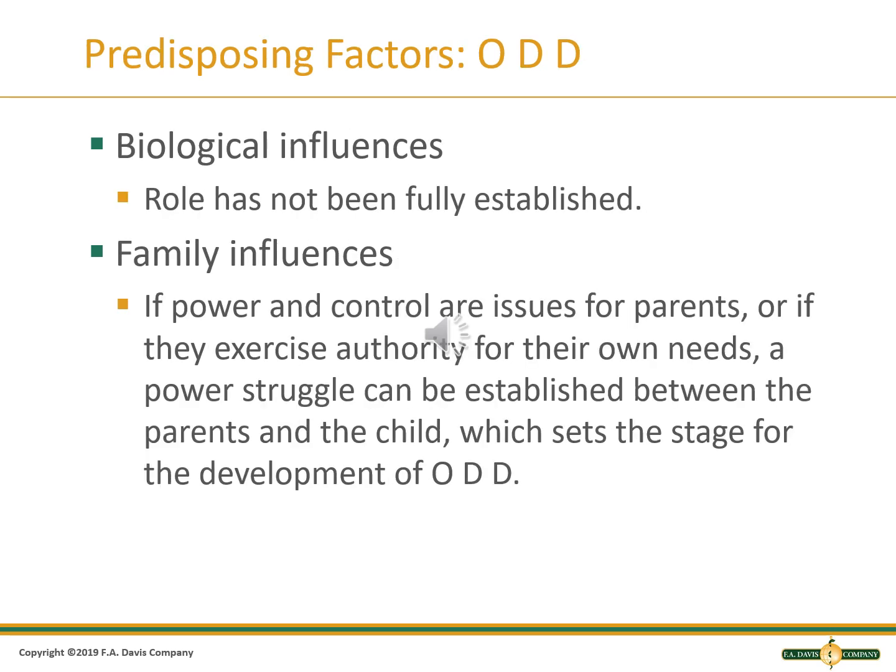Predisposing factors for ODD: Biological influences have not clearly been established. Although there is a belief that there is a connection between genetics and temperament, there is not a clear connection between genetics or biochemical alterations and ODD. As for family influence, there may be power struggles between the parent and the child.